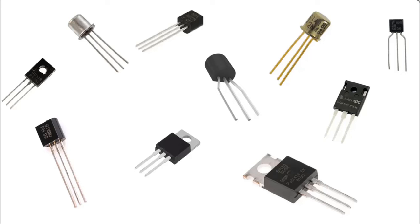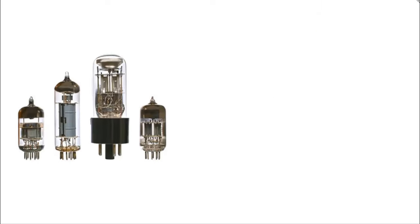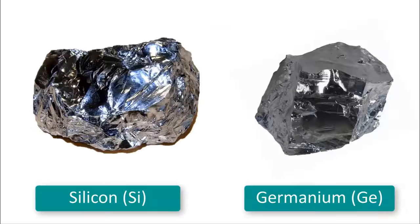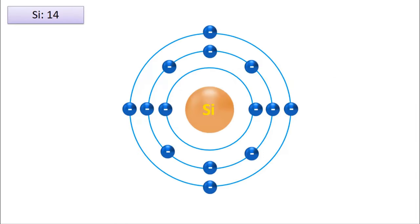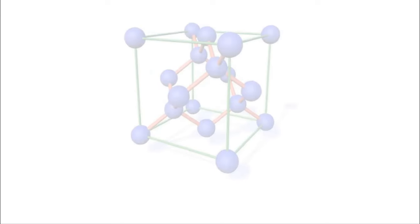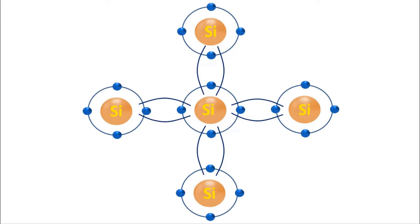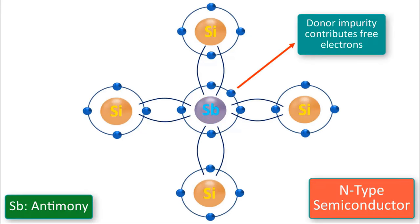It was invented in 1947 and quickly replaced the vacuum tube as an electronic signal conditioner. It consists of a layer of doped semiconductor materials such as silicon and germanium, each of which can carry a current. The subject of this video is not the structure and history of transistors, but after a small introduction we can move on to our main topic.